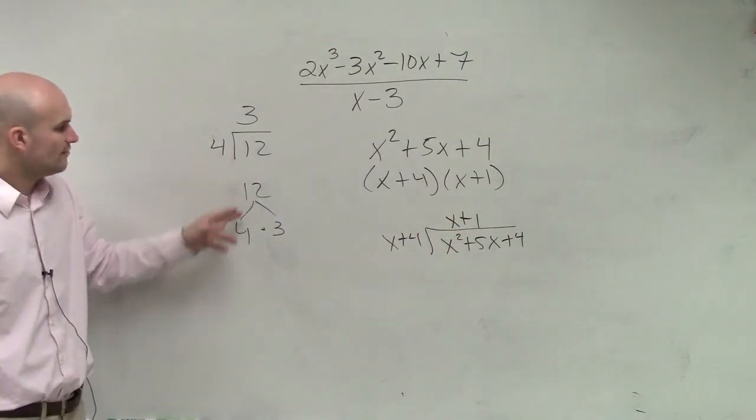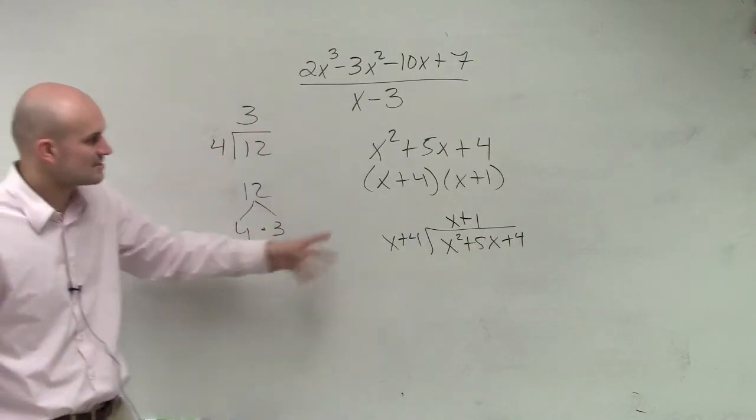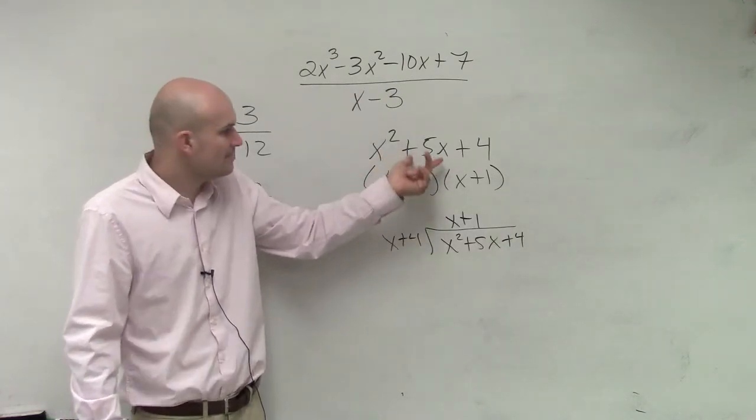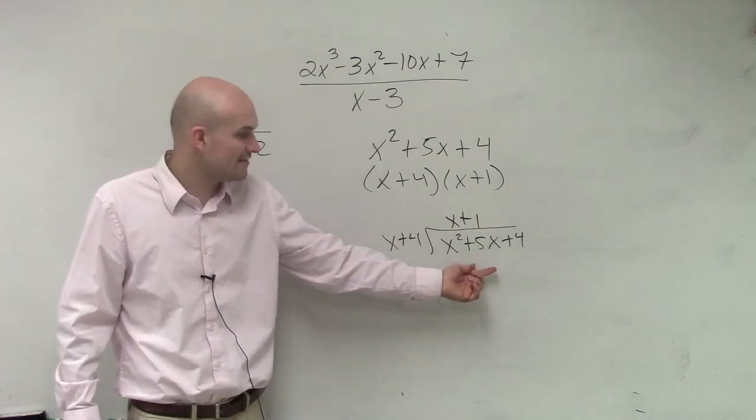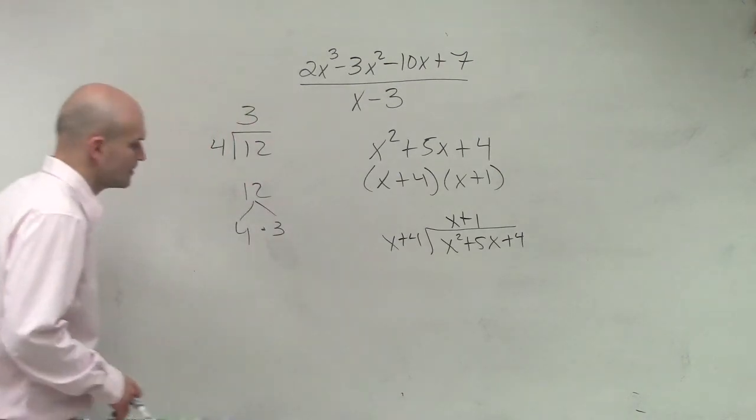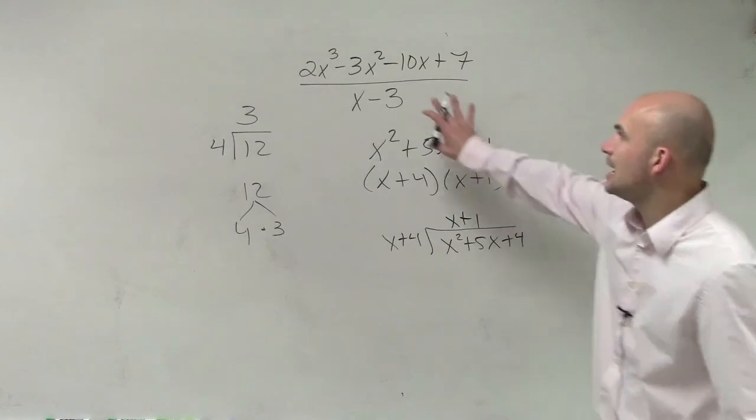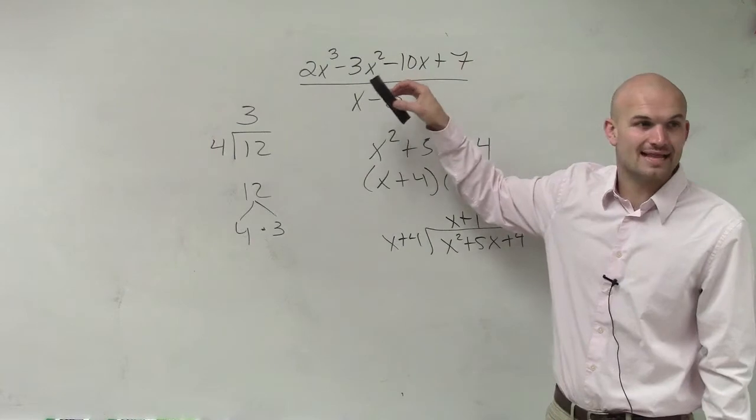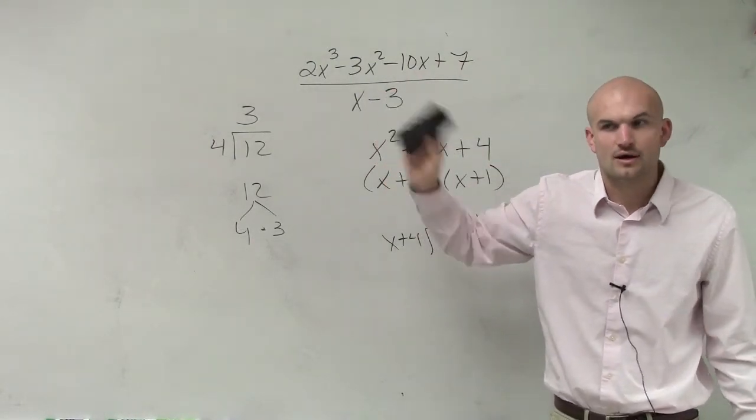It's just like 4 and 3 are factors of 12 because 4 divides into 12 three times. x plus 4 and x plus 1 are factors of x squared plus 5x plus 4 because x plus 4 divides into x squared plus 5x plus 4, x plus 1 times. Now, let's go ahead and take a look at how we're going to apply this up here. So if I say x minus 3 divides into that, then can I say it's a factor? Yes.